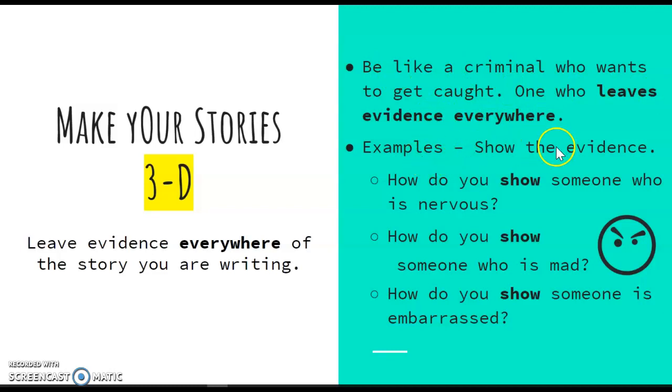Here are some examples of how we can show the evidence. How do you show someone is nervous? We might say their eyes were peeking around the classroom and they were looking around suspiciously, playing with their hands, toying with their pencil. How do you show someone is mad? Maybe they slammed their computer down onto the desk and screamed at the person sitting next to them. How do you show someone is embarrassed? Maybe their cheeks flushed red and they lowered their head and peeked up at the rest of the class through their eyelashes. These are ways of showing and not telling.